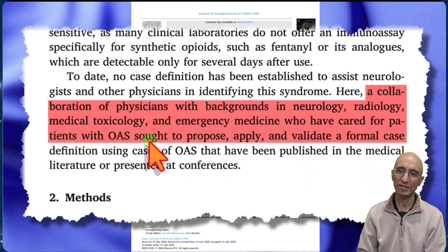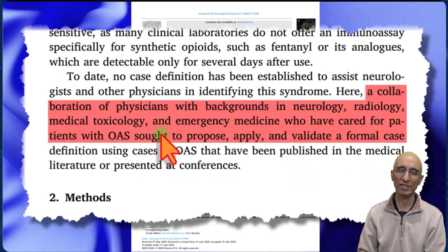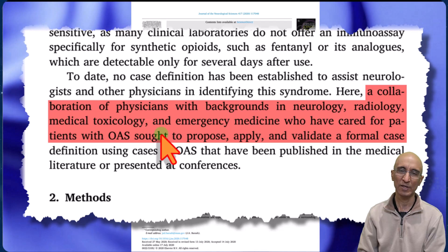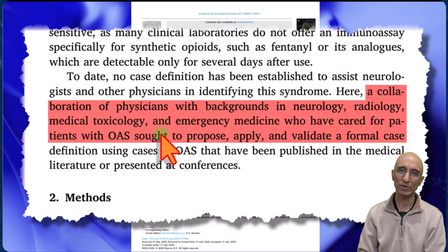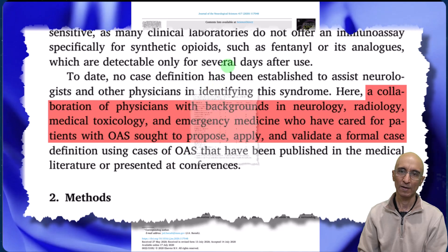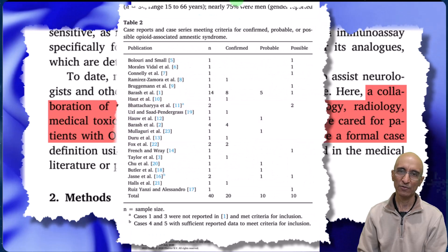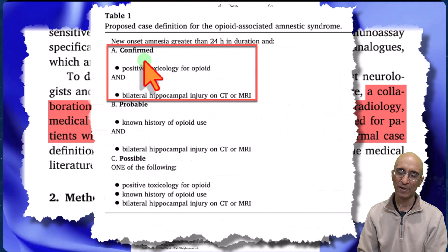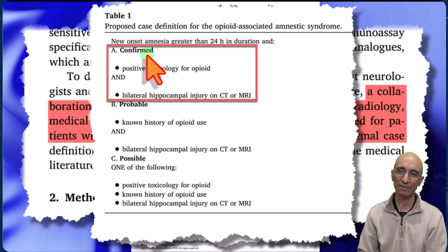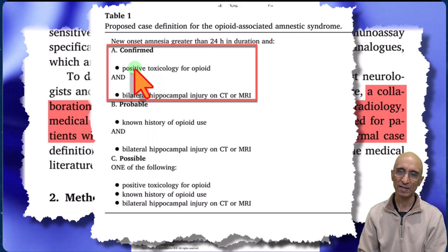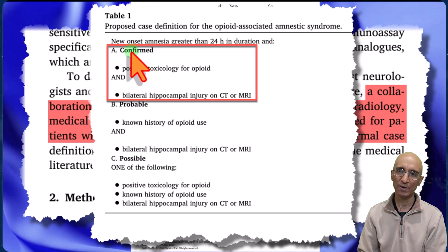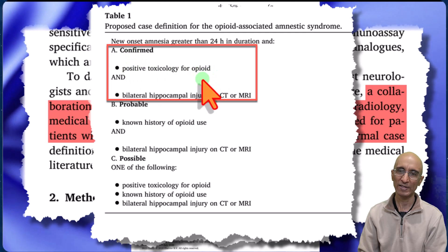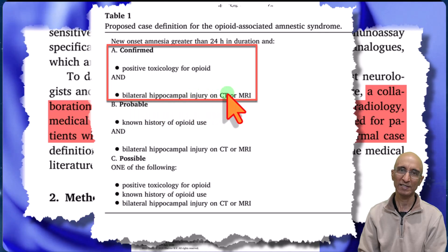A group of physicians in neurology, radiology, medical toxicology, and emergency medicine who care for patients with OAS collaborated to define the criteria for OAS. On literature search, they identified 40 patients and came up with criteria based on which patients can have confirmed, probable, or possible OAS. Our patient falls under the confirmed criteria because his toxicology screen was positive for fentanyl and he had bilateral hippocampal signal changes.